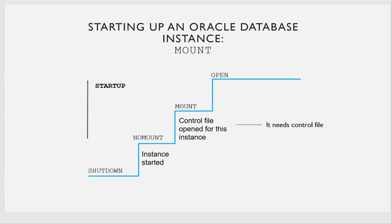From no-mount to mount, the database needs a control file — it reads the control file. The control file location is specified inside the init file. The instance goes to that location, checks for the control file, reads it, and transitions to mount state. If no control file is found, the instance stays in no-mount mode.